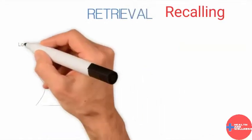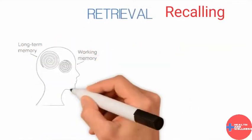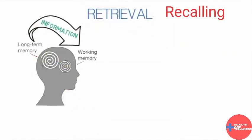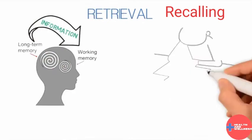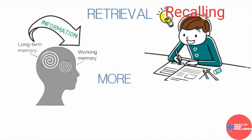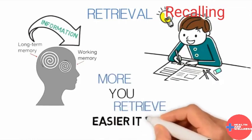Retrieval. Taking information out of long-term memory and into our conscious working memory so we can change our behavior. Retrieval gets easier when you practice. The more you retrieve something from long-term memory, the easier it becomes.